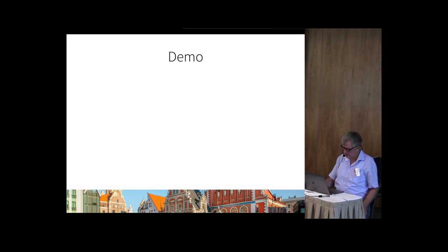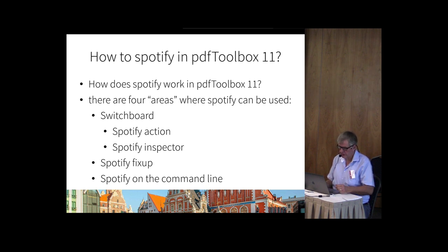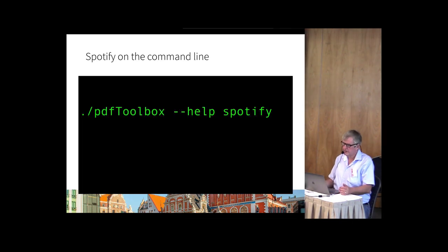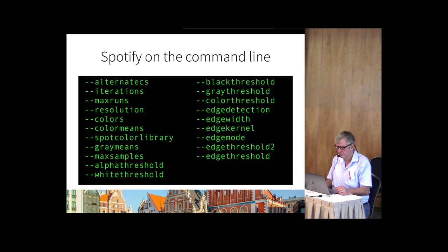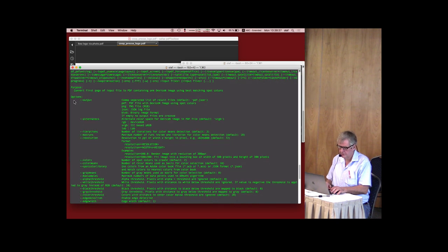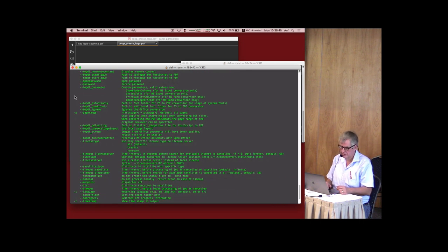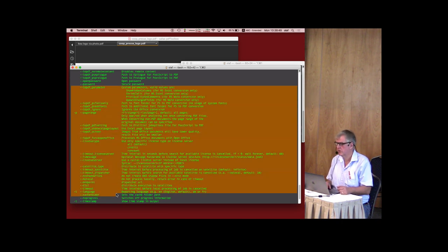That was a short demo. We looked at the Switchboard using the Spotifyer action — a push-button approach — the Spotifyer Inspector to look behind the scenes and find the best parameters for setting up a fix-up that does a more refined job, and how you set up and use the Spotifyer fix-up. What's left now is a short look at what you could do on the command line. Get started by looking at the help feature: --help spotifyer will give you quite extensive information — there are options specific to Spotifyer and then all the other options for how you actually process PDF files.